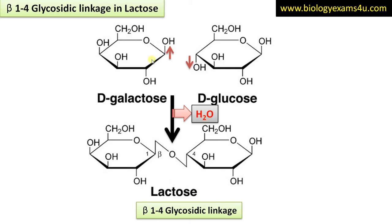Therefore the bond formed is a zigzag bond, called beta 1,4 glycosidic linkage. In short, in alpha 1,4 glycosidic linkage the OH group on the first anomeric carbon is below the plane, whereas in beta 1,4 glycosidic linkage the OH group is above the plane of the glucose ring. That is the difference between alpha and beta glycosidic linkage. Here galactose and glucose form the disaccharide lactose, formed by beta 1,4 glycosidic linkage.